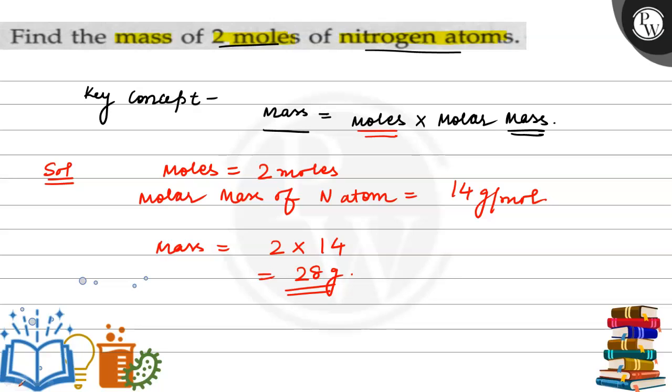And this is the solution to this question. The mass of two moles of nitrogen atom is 28 grams, and we found it by using the key concept. I hope you understand it well. All the best.